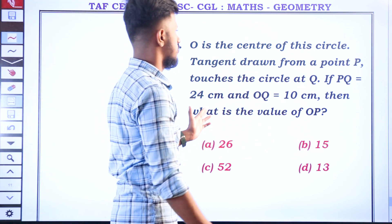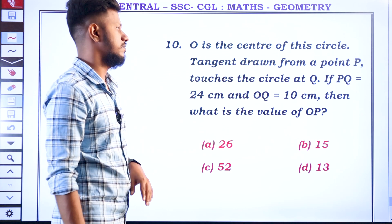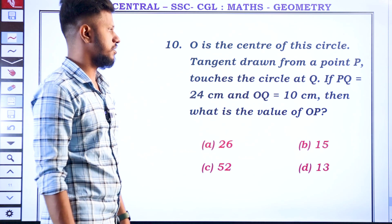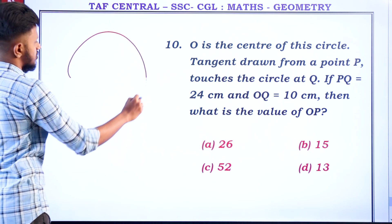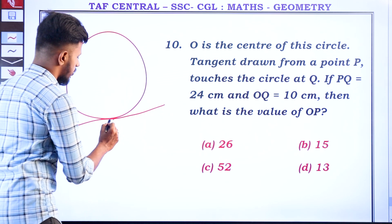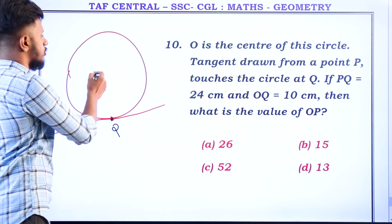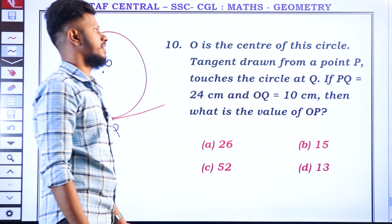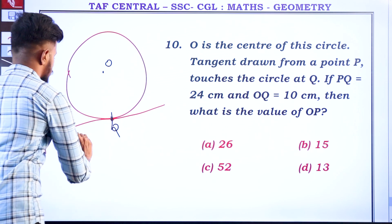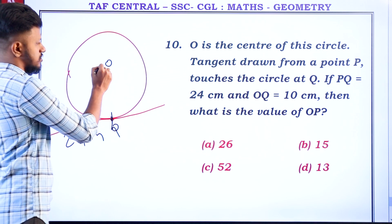If you look at the answer: O is the center of the circle. A tangent drawn from a point P touches the circle at Q. If PQ is equal to 24cm and OQ is equal to 10cm, then what is the value of OP? If you look at point P, then there are two circles, and if you look at the tangent where P is, the value of OP — you use Q to look at that point, and you say O. PQ is 24cm and OQ is 10cm.